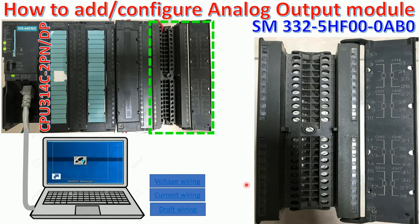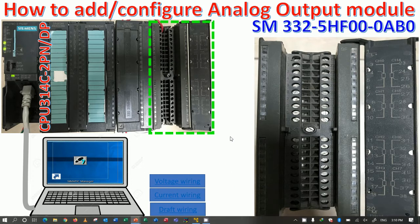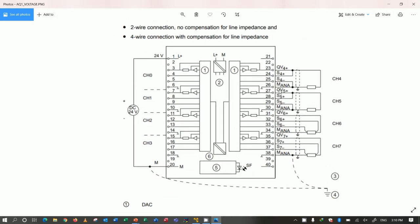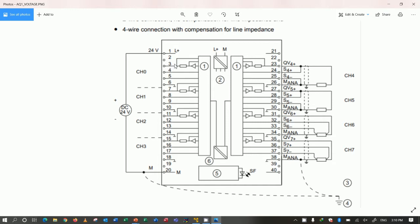First I would like to explain how to wire when we select to use voltage. If we would like to use the connection via voltage, we can use these terminals. Let's see here: channel 0, channel 1, channel 2, channel 3, channel 4, channel 5, channel 6, until channel 7. This is the 4-wire connection with voltage.